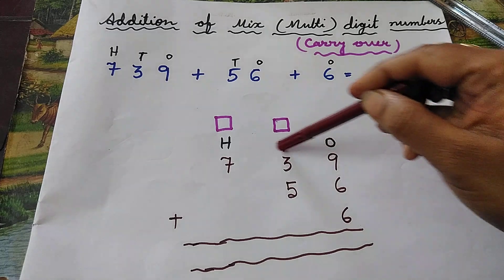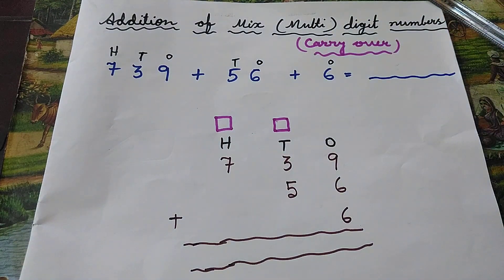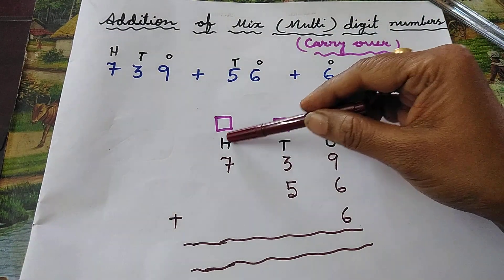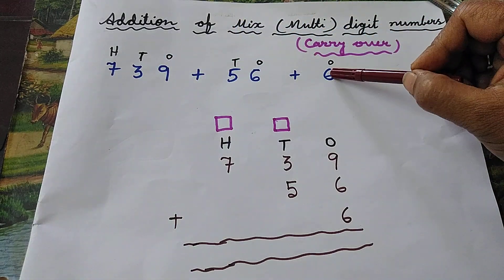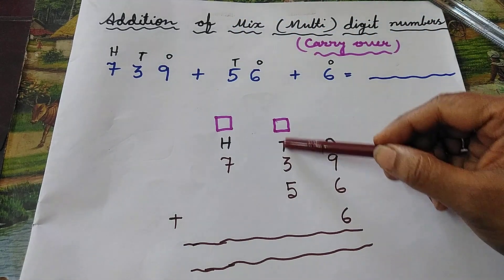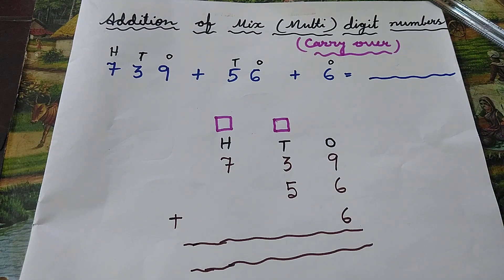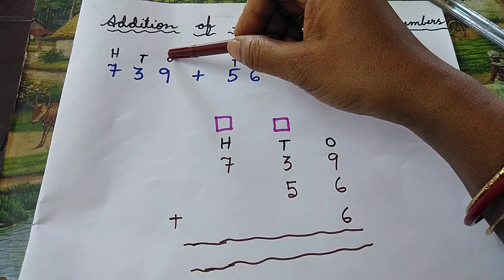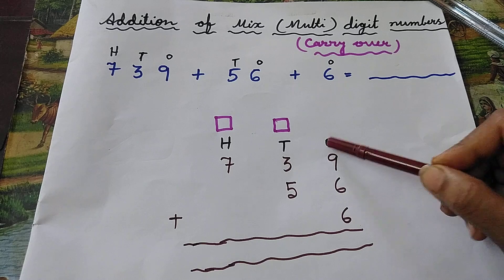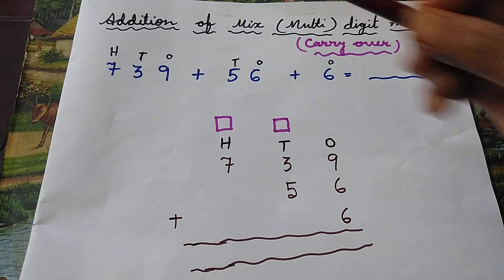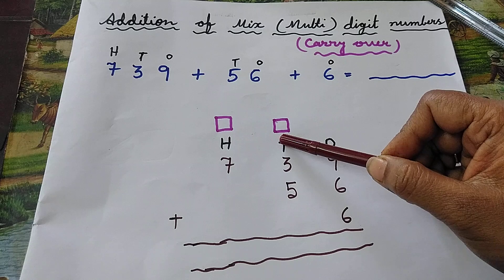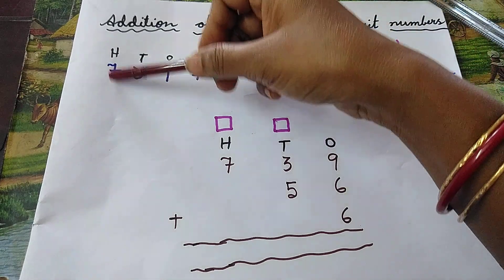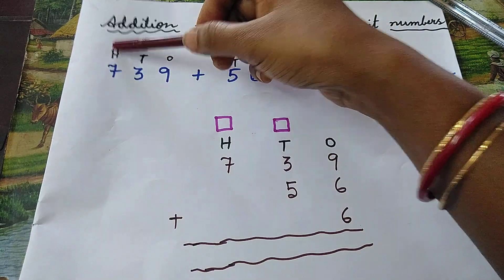Write a place value chart up to hundreds: ones, tens, and hundreds. Now arrange all these digits in their respective places. In the first number, nine belongs to ones place — so write nine in ones place. Three belongs to tens place — write three in tens place. Seven belongs to hundreds place — write seven in hundreds place.